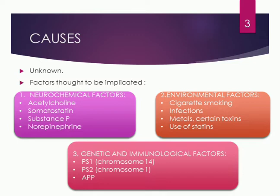There are several factors thought to be implicated in starting or progressing the disease. The first is the neurochemical factor. If there is a reduction in acetylcholine — a neurotransmitter in the brain that helps build connections between neurons and increases memory power — the enzyme acetylcholinesterase, which destroys or disintegrates acetylcholine, will be dominant in this disease. So acetylcholine will be damaged and memory will be lost. Next are somatostatin, substance P, and an excess of norepinephrine.